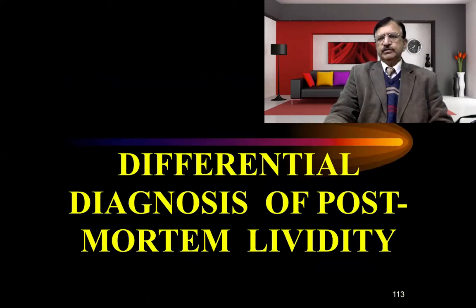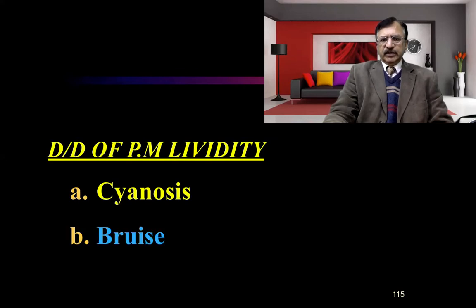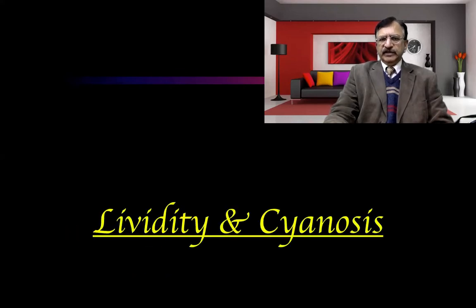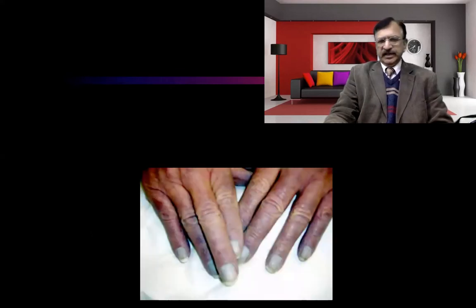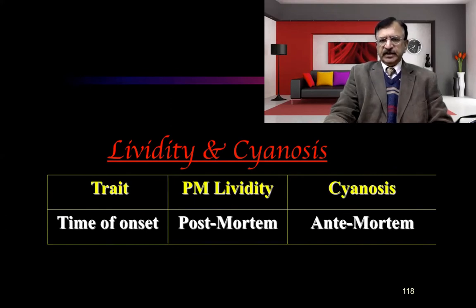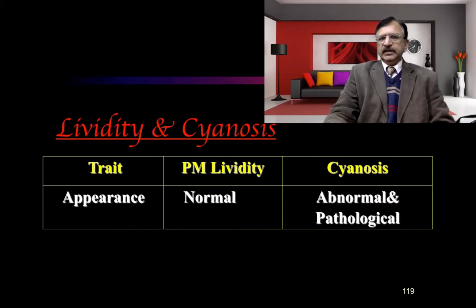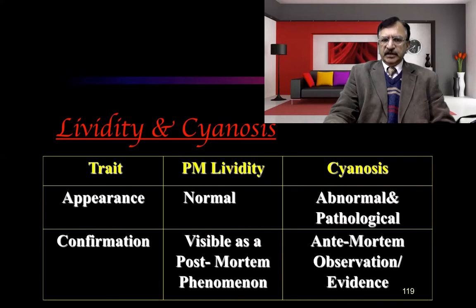Now, the differential diagnosis of post-mortem lividity — conditions which simulate it. These are cyanosis, bruise, and congestion. Regarding lividity versus cyanosis: post-mortem lividity is a post-mortem phenomenon, whereas cyanosis is an ante-mortem phenomenon. As for location, post-mortem lividity is on the dependent parts, whereas cyanosis is on the terminal tips. The appearance of post-mortem lividity is normal in all types of death, whereas cyanosis is an abnormal, pathological sign. Post-mortem lividity shifts with change of position if unfixed, whereas cyanosis has no relation with change of position and remains on the terminal tips.